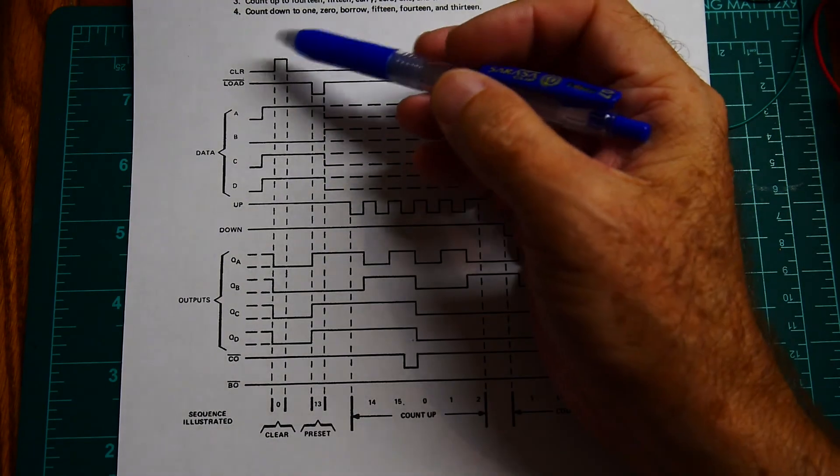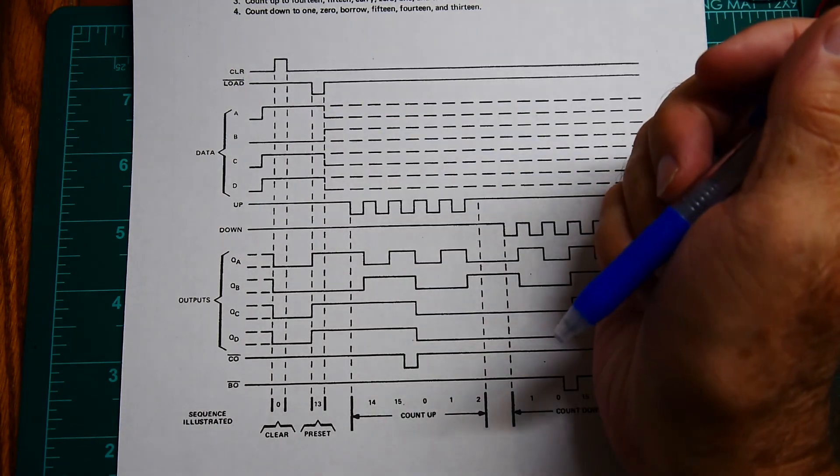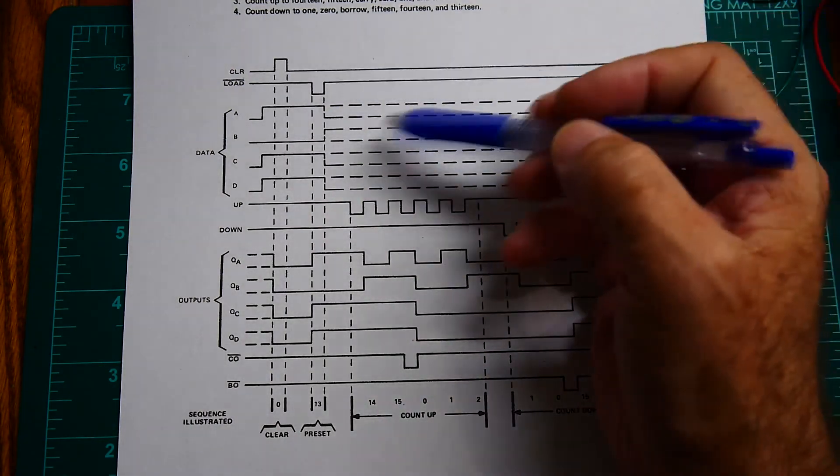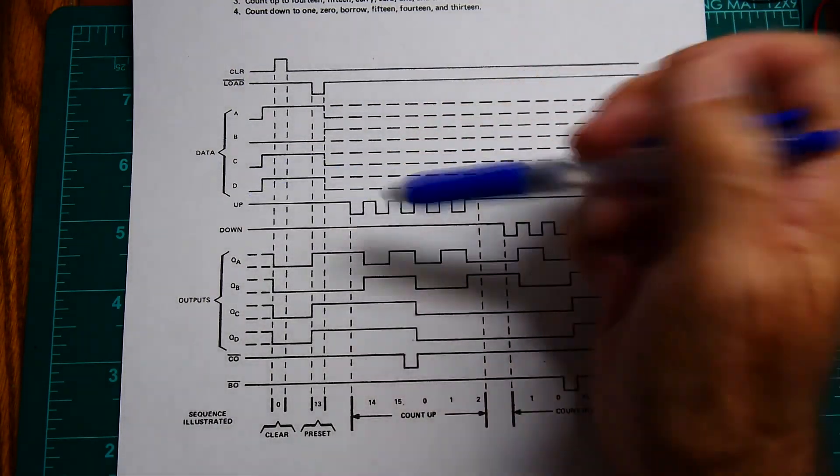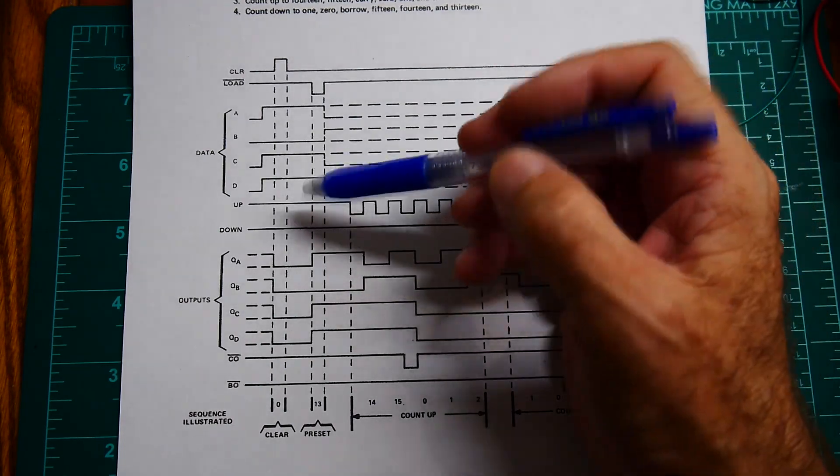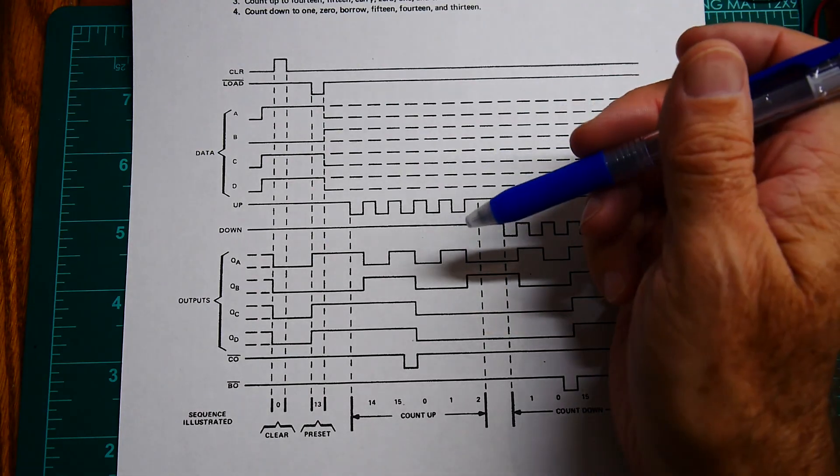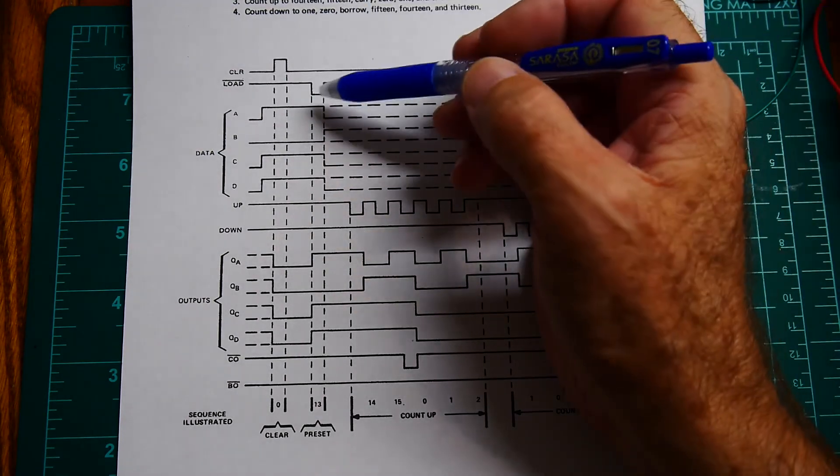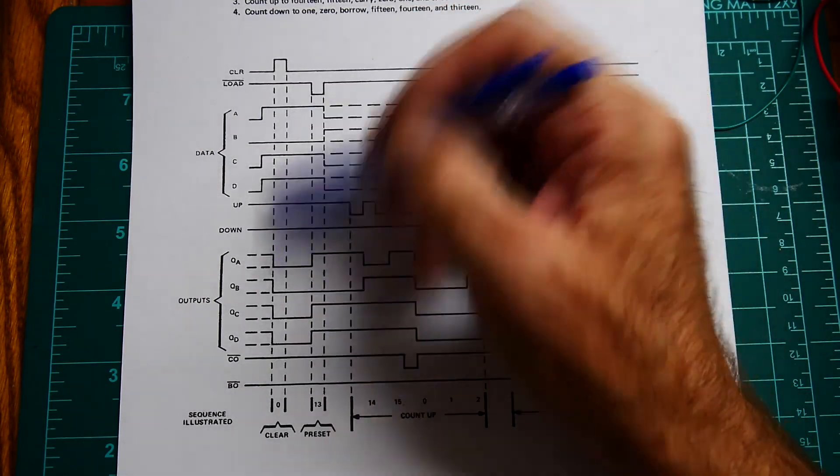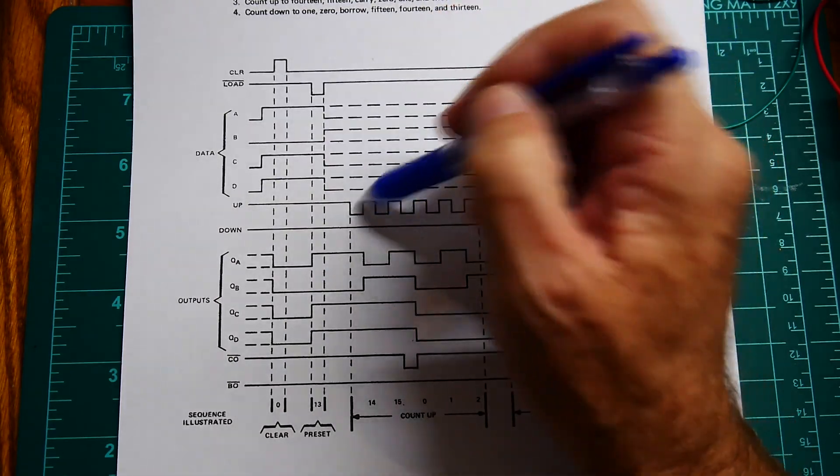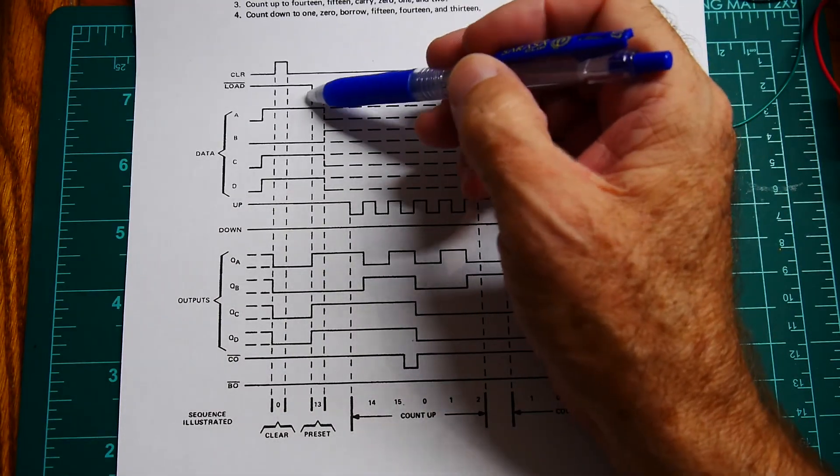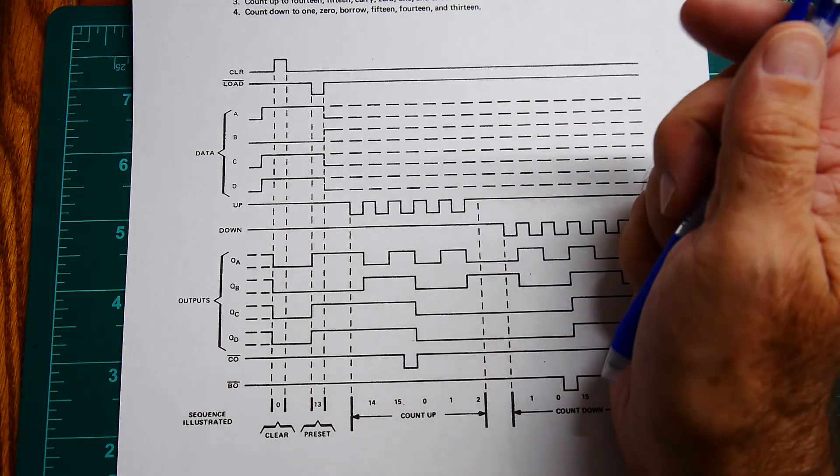So it has an asynchronous clear. You can see it actually has two clocks so it has an up clock and a down clock which is nice, you can count up, count down, and you can do a clear function anytime you want to without a clock and you can do a load function anytime you want to without a clock, so perfect.